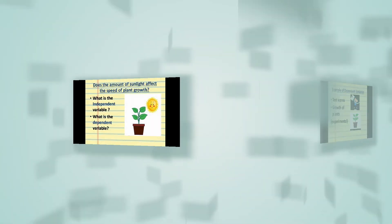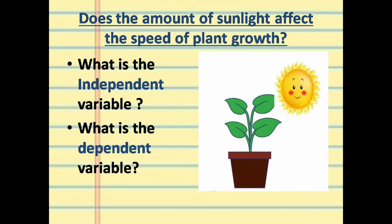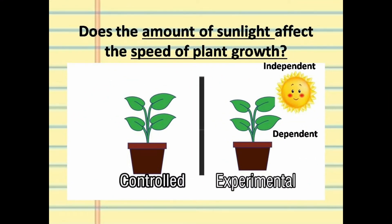To make it clearer, here is an experimental example: Does the amount of sunlight affect the speed of plant growth? What is the independent variable? What is the dependent variable? As we can see in the picture, we have a controlled group and an experimental group. In the experimental group, there is sunlight — the amount of sunlight. So the independent variable is the sunlight or amount of sunlight, and the dependent variable is the plant.